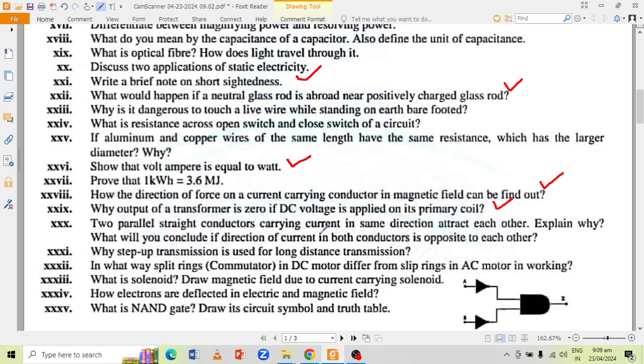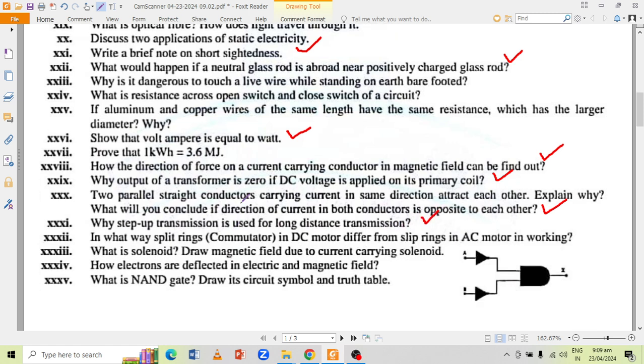Two parallel straight conductors carrying current in same direction attract each other. Explain why. What will you conclude if the direction of the current in both conductors is opposite to each other? Why step-up transmission is used for long distance transmission? In what ways split rings in DC motor differ from slip rings in AC motor in working? What is solenoid and draw magnetic field due to current carrying solenoid? How electrons are reflected in electric and magnetic field?